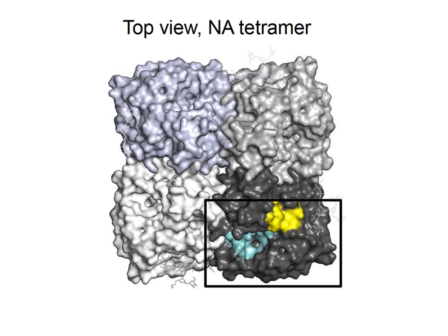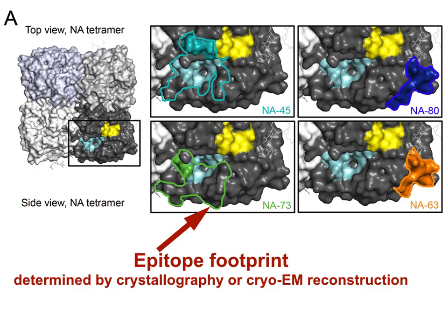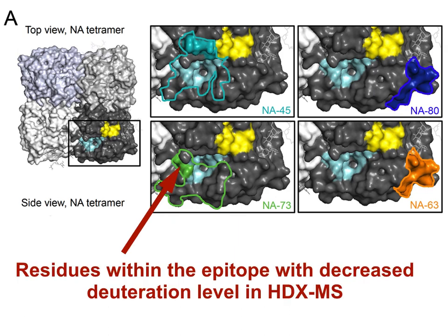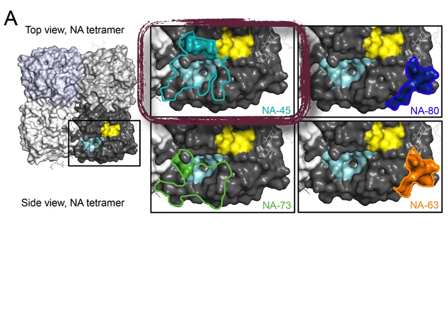We performed a series of studies and found the epitopes for five of the most interesting antibodies. The epitope footprint determined by crystallography or cryo-EM reconstruction from the accompanying paper by Wilson and Ward is shown by line outlines. And the residues discovered with decreased labeling or deuteration level in hydrogen-deuterium exchange mass spec are shown in solid color on the surface.